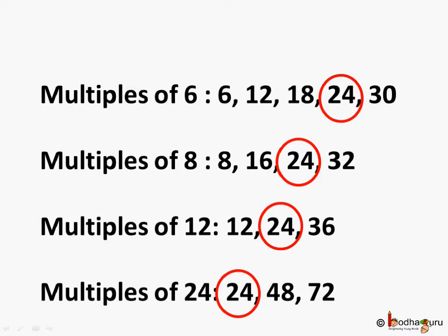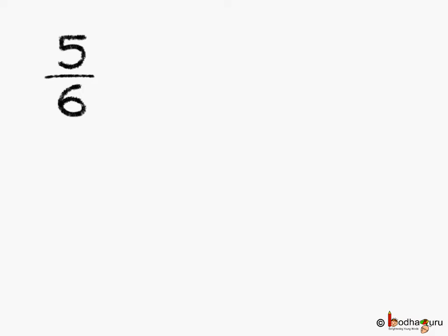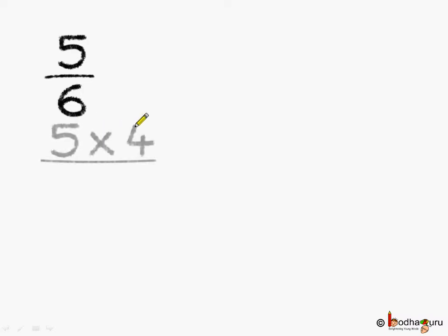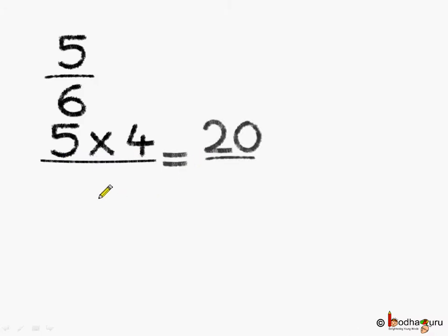So, let us use it to make the denominators of all the fractions the same. First, it is 5 by 6. In order to make the denominator as 24, we need to multiply by 4. So, we multiply both the numerator and the denominator by 4. 5 multiplied by 4 is equal to 20. The denominator becomes 6 multiplied by 4, which is 24.